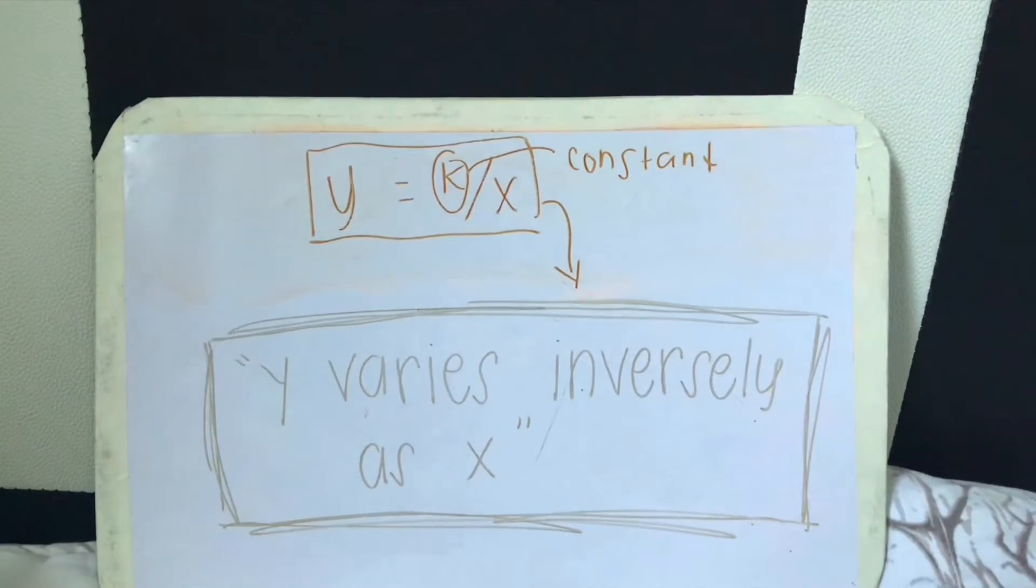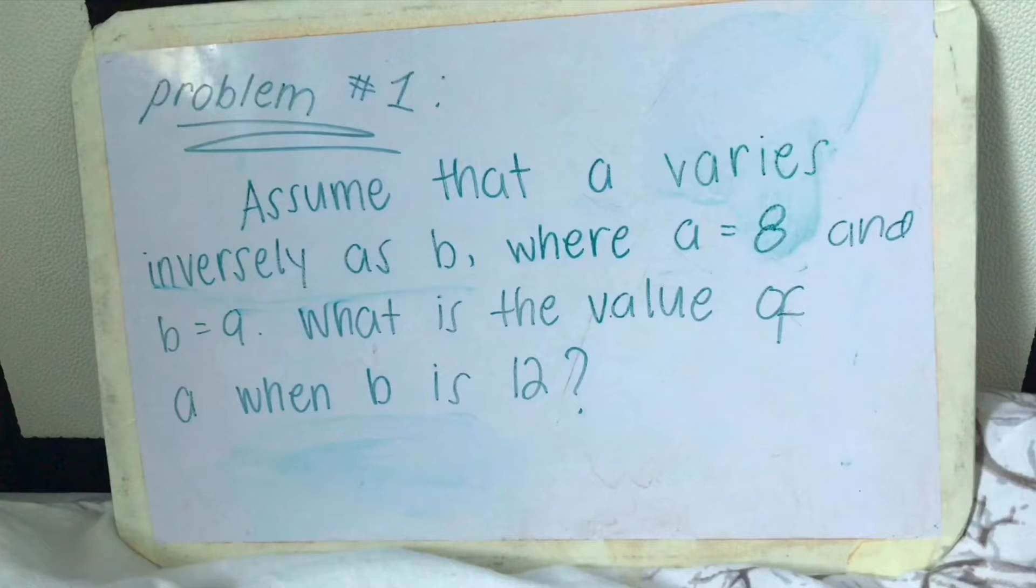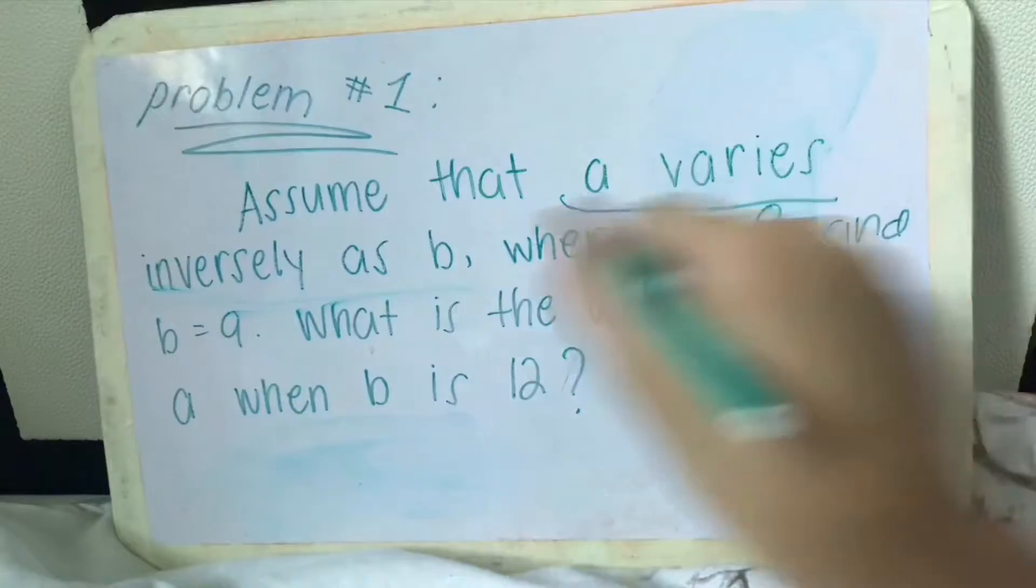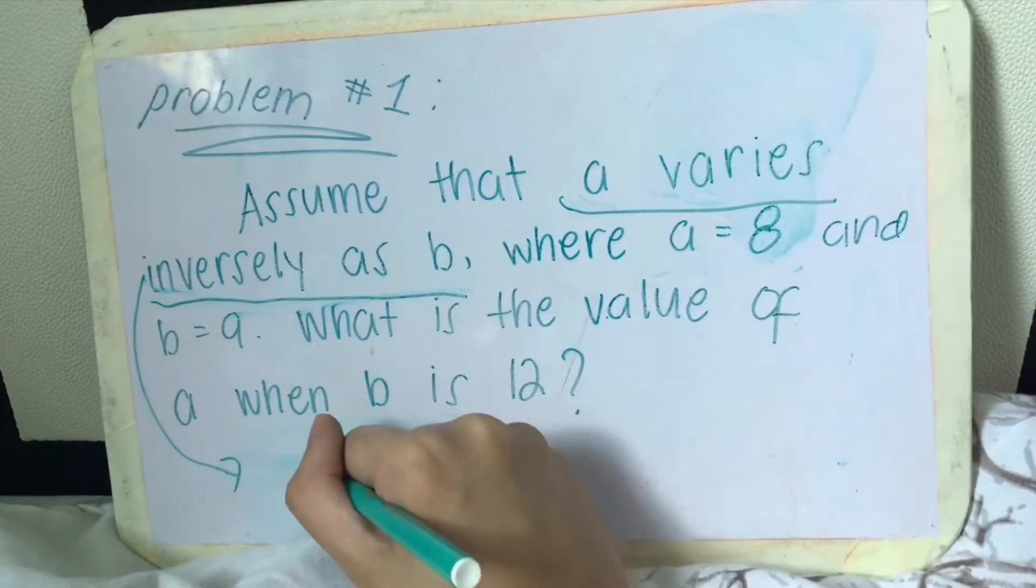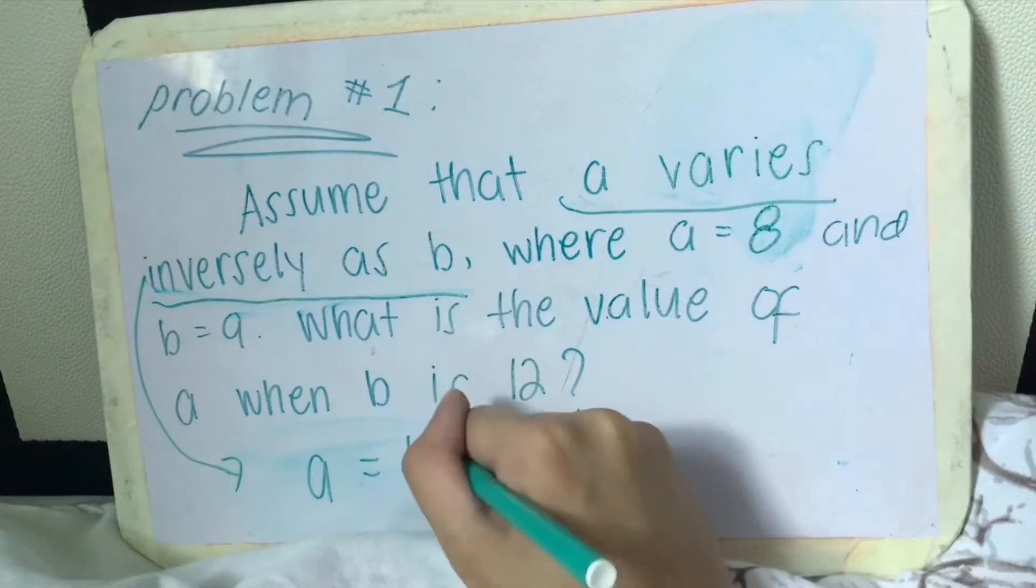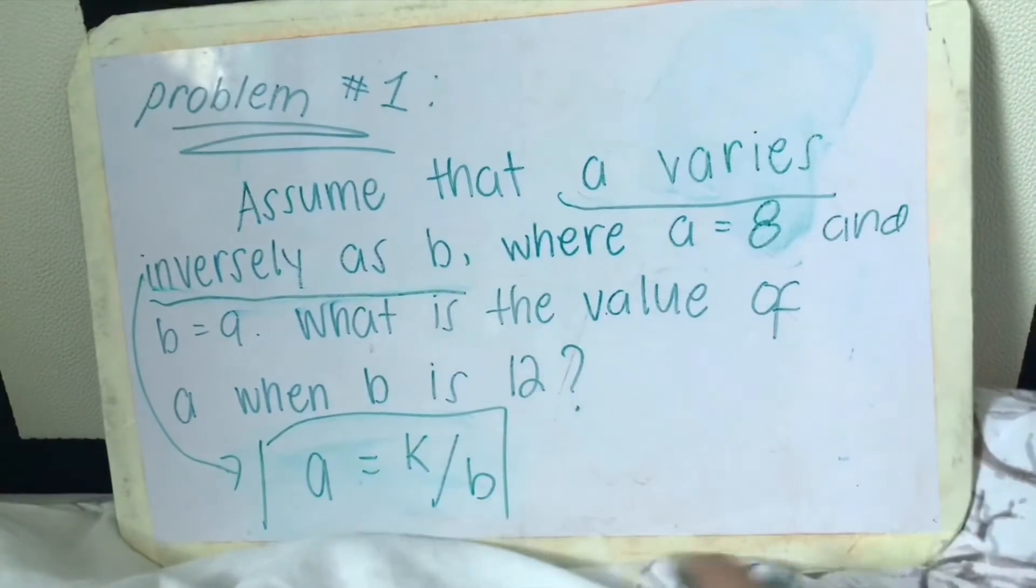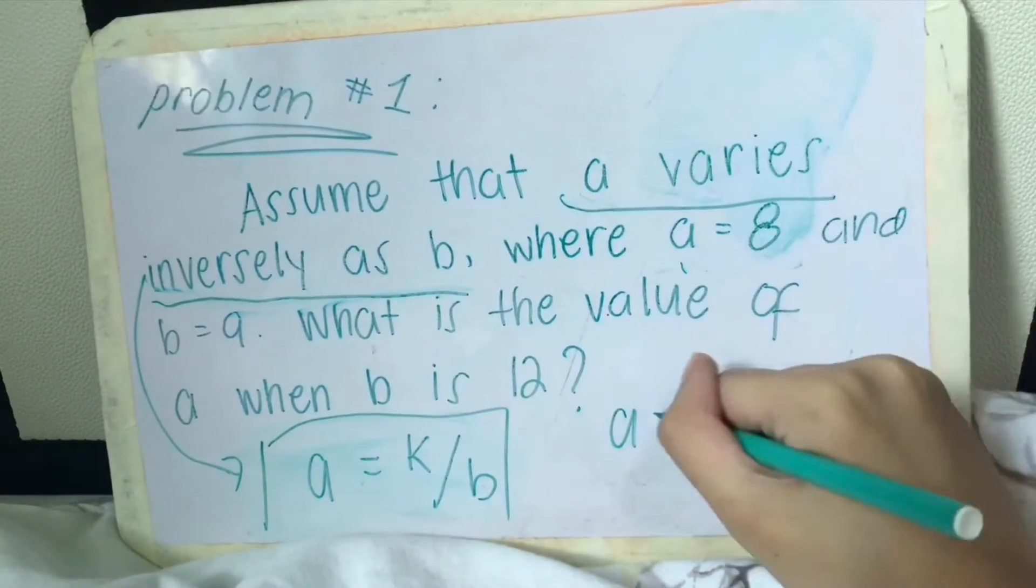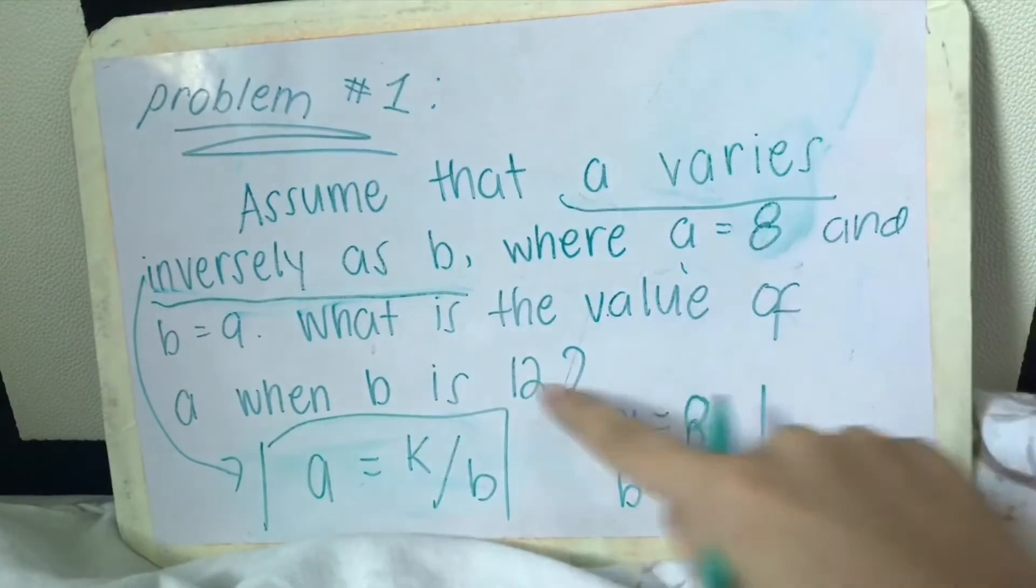So let's start with the basics by answering example number one. A varies inversely as b. Let's convert this to a formula, so our formula will be a equals k over b. This is the formula that we're going to use for solving this problem, where a equals 8 and b equals 9. What is the value of a when b is 12?